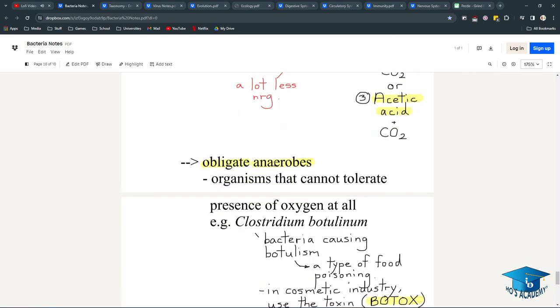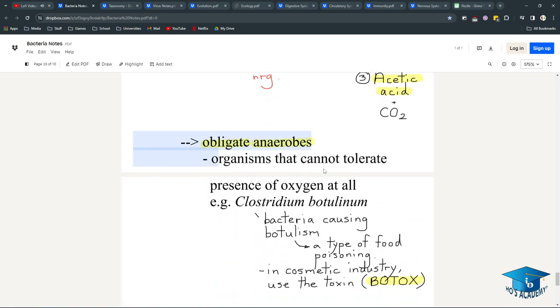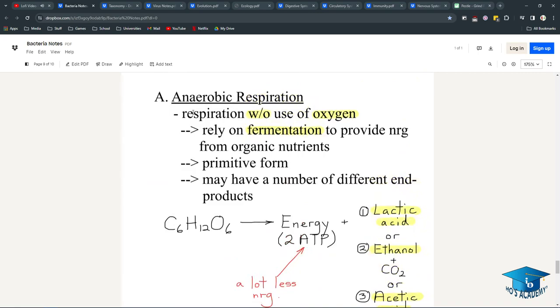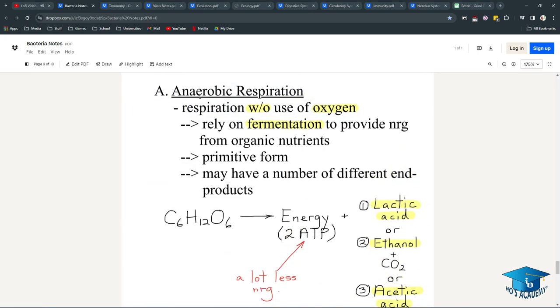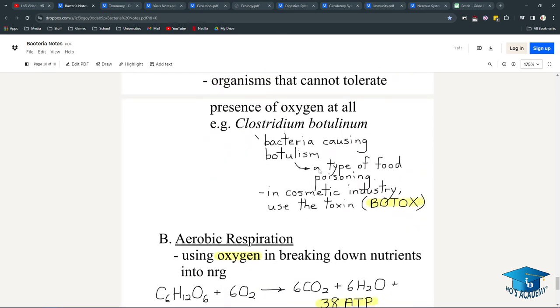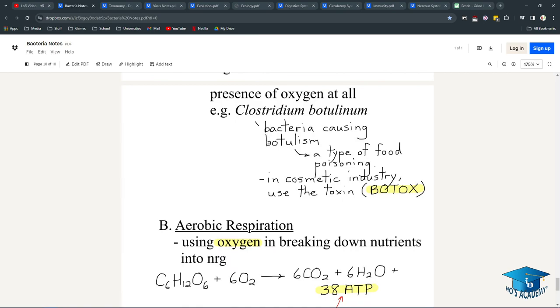Obligate anaerobes are organisms that cannot tolerate the presence of oxygen at all. Obligate means they must, so they must not have oxygen. For example, Clostridium botulinum produces the botulinum toxin, which causes botulism, a food poisoning kind of paralysis.